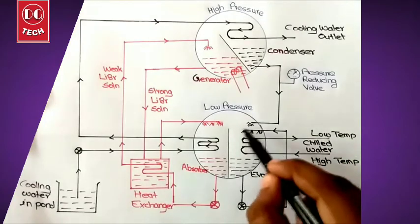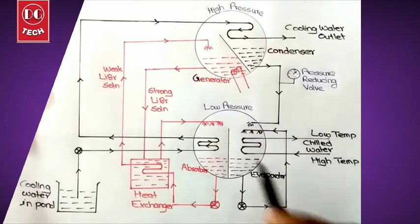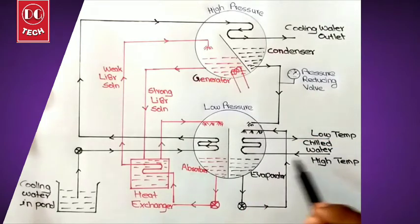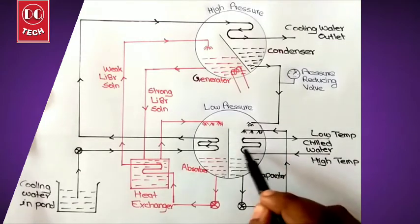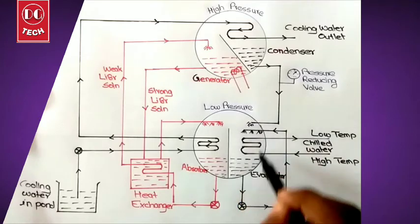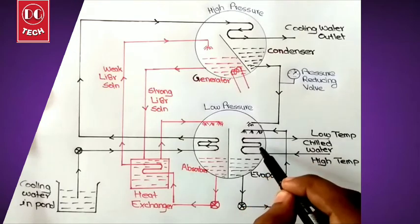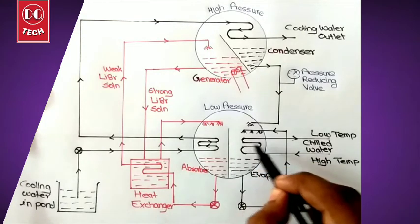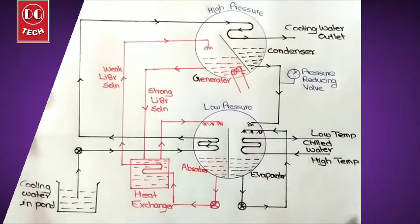Since the pressure and temperature inside the evaporator are both very low, it will absorb heat from the pipe carrying the water to be chilled. When warm water is passed through this pipe, the very low temperature atmosphere of the evaporator absorbs heat from it, so the temperature of the water in the pipe gets reduced and we get chilled water. That is the working principle of the lithium bromide vapor absorption system. Thank you for watching.